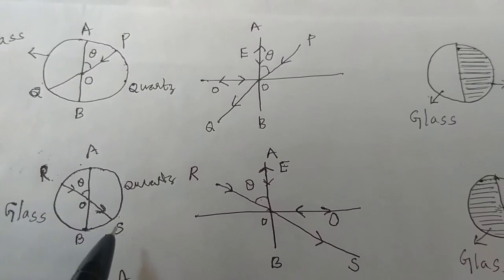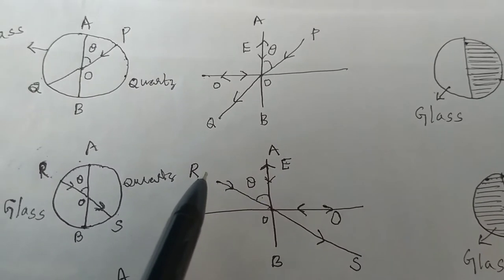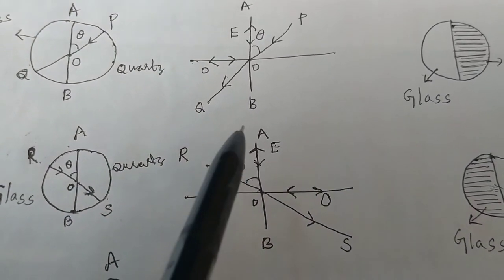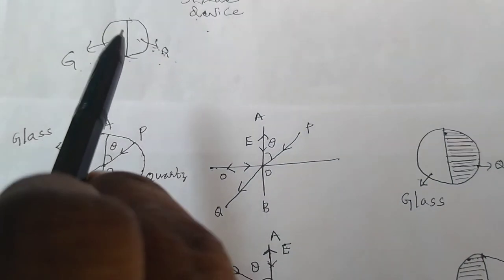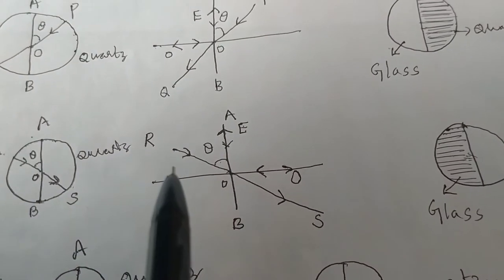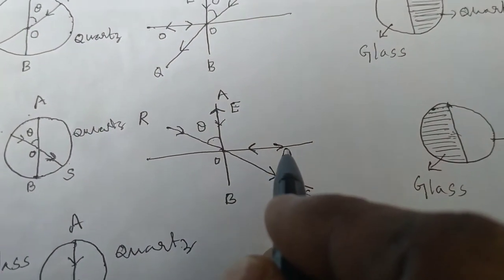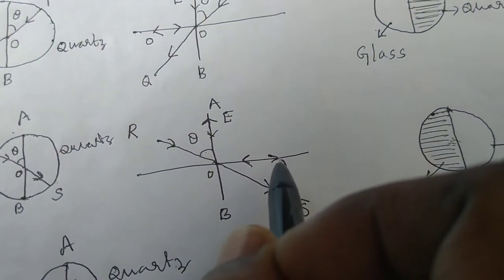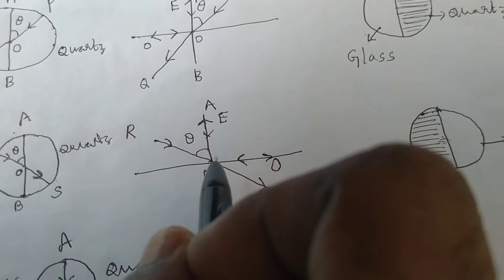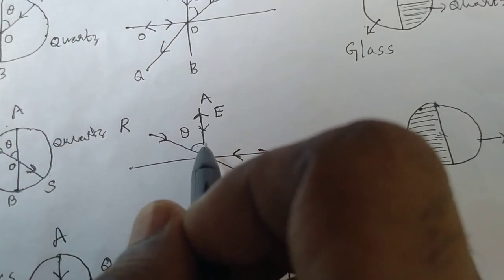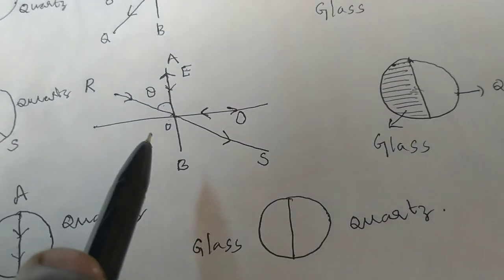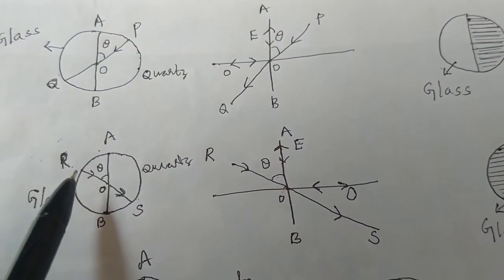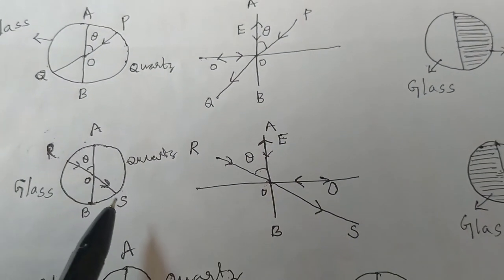The polarized light moving in the RO direction in the glass part makes an angle theta with the cement part. This also splits into two components — one is the ordinary component moving in one direction and the other extraordinary component moving in another direction. Due to the phase difference reversal, the ordinary component comes back in one direction and the extraordinary ray also comes back in another direction, and these two components combine.